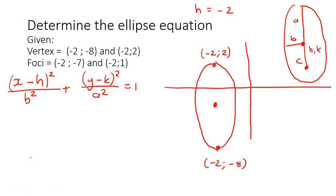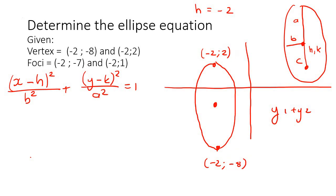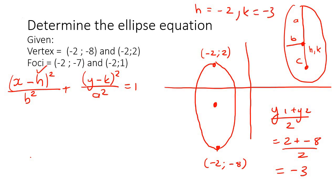To find the y value of the center, we add the two y values together and divide by 2: (2 plus negative 8) divided by 2 gives us negative 3. So k is negative 3. The center is (-2, -3). Now we can find the length of a, which is from negative 3 up to 2, giving us 5. So a equals 5.